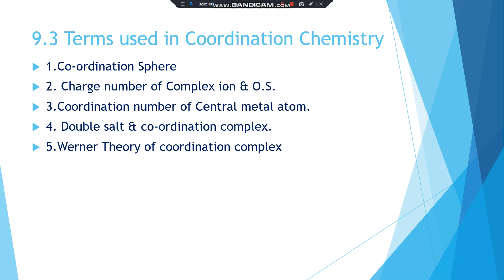The next topic is terms used in coordination chemistry. There are five terms: first, coordination sphere; second, charge number of complex ions and oxidation state; third, coordination number of the central metal atom; fourth, double salt and coordination complex; and fifth, Werner's theory of coordination complex.